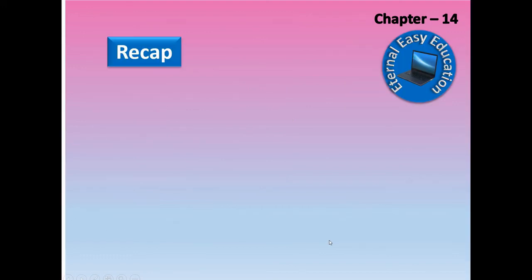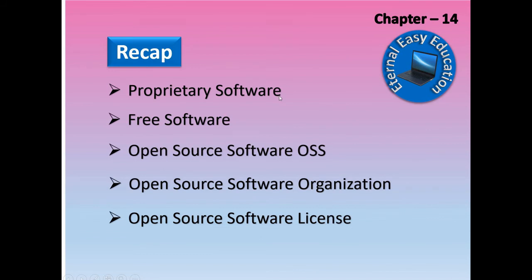To summarize what we learned in this video: proprietary software is a paid version belonging to an organization or individual; free software can be downloaded for free; open source software can be downloaded and modified, and is maintained or supervised by many organizations. One such organization in India is NRCFOSS, which belongs to the open source software initiative of India. There are also many open source software licenses provided by various companies.